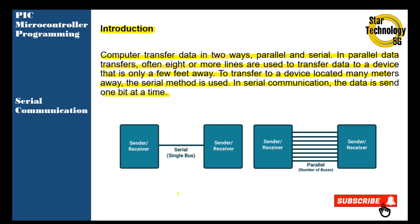You can see here is the serial communication. In serial communication we will use two lines, but in parallel communication we will use eight lines.